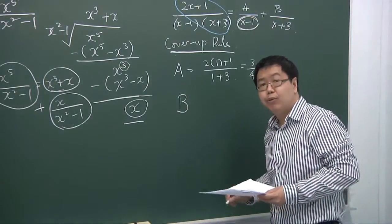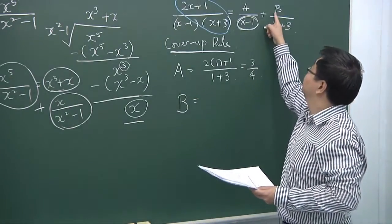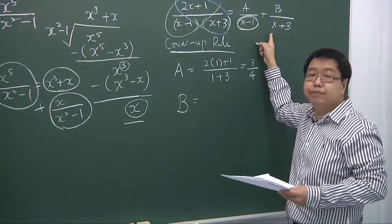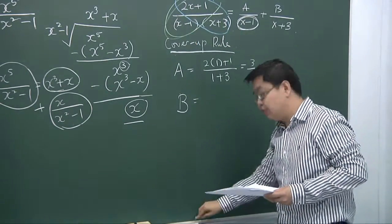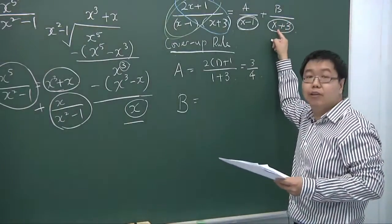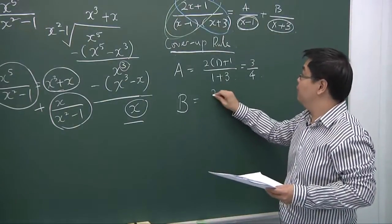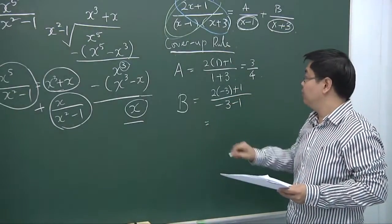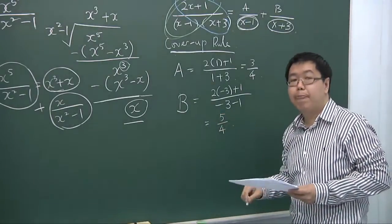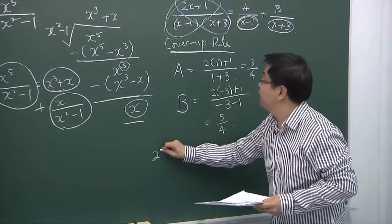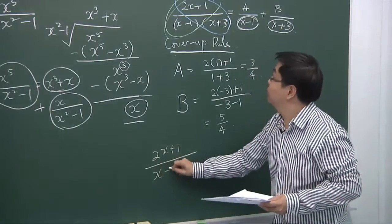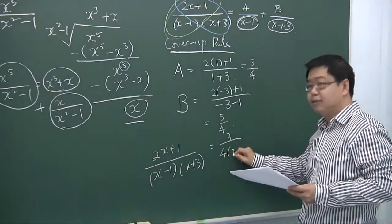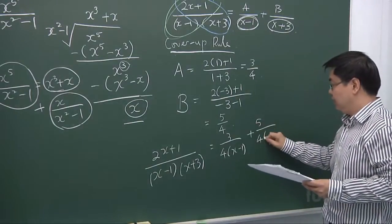To find the value of B, we cover (x plus 3) and substitute x equals minus 3, because that is the value that makes this denominator equal to zero. So B equals 2 times minus 3 plus 1 over minus 3 minus 1, giving 5 over 4. We then present our answer as 2x plus 1 over (x minus 1)(x plus 3) equals 3/4 over (x minus 1) plus 5/4 over (x plus 3).